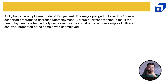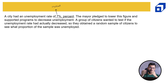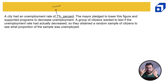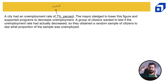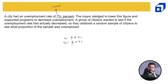Let's try the second problem. A city had an unemployment rate of 7% — this is the initial state. The mayor pledged to lower this figure and a group of citizens want to test if the unemployment rate has actually decreased. The new finding: unemployment rate should go below 7%. So alternate hypothesis: average less than 7%. Null hypothesis: average greater than or equal to 7%.